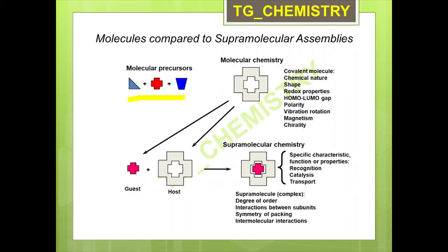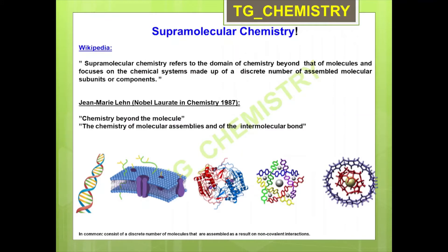According to Wikipedia, supramolecular chemistry refers to the domain of chemistry beyond that of molecules and focuses on chemical systems made up of a discrete number of assembled molecular subunits or components. Jean-Marie Lehn, who received the Nobel Prize in Chemistry in 1987, described supramolecular chemistry as 'the chemistry beyond the molecule' and 'the chemistry of molecular assemblies and of the intermolecular bond.'